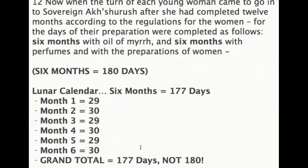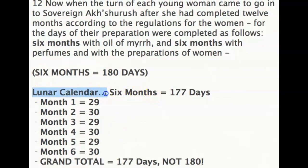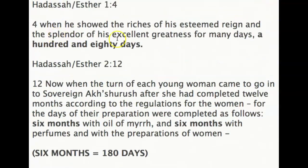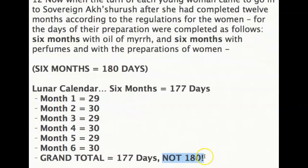But if you look at the lunar calendar mathematically, six months would only be 177 days — because month 1 is 29 days, month 2 is 30, month 3 is 29, month 4 is 30, month 5 is 29, month 6 is 30, giving a grand total of 177 days, not 180. So if they were using the lunar calendar back then, it should say 177 days in Esther 1:4, not 180. This shows the lunar calendar could not have been used.